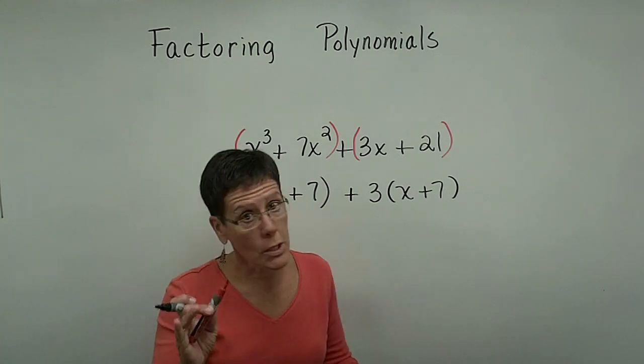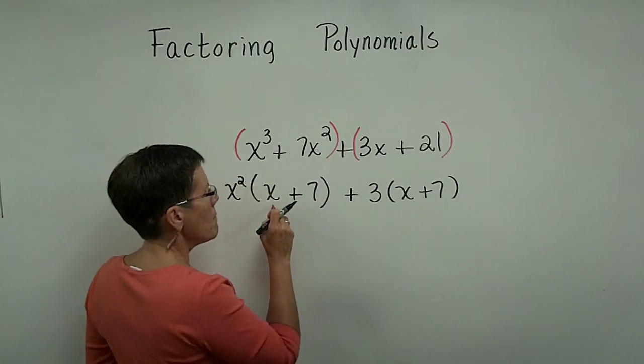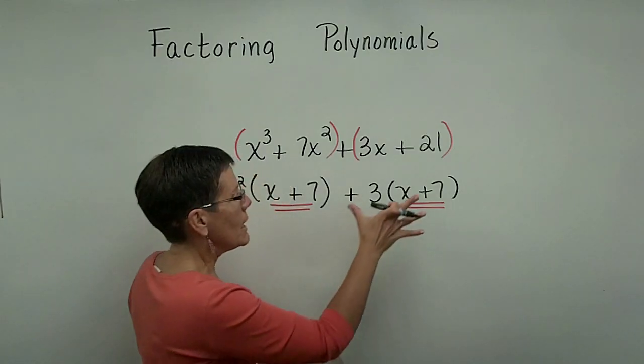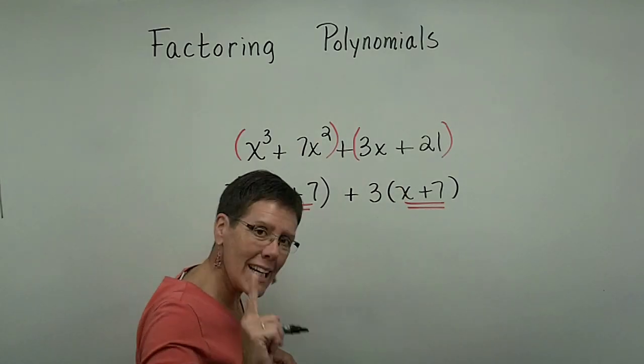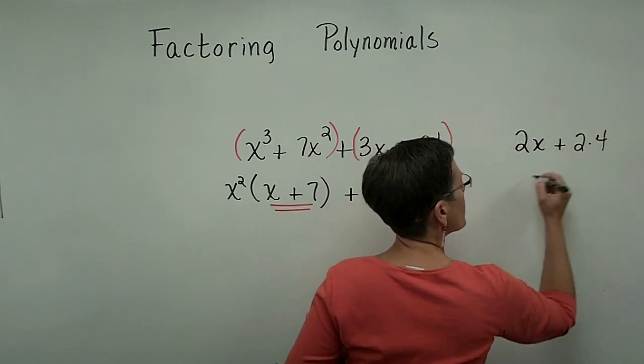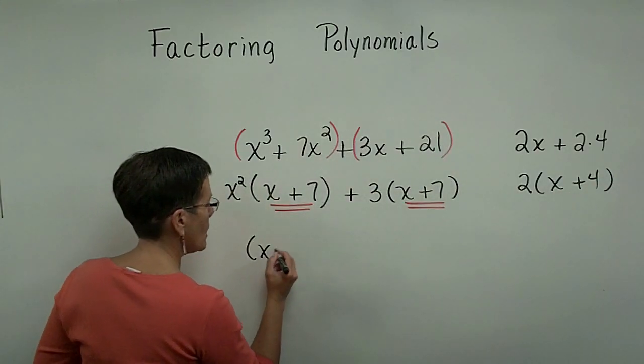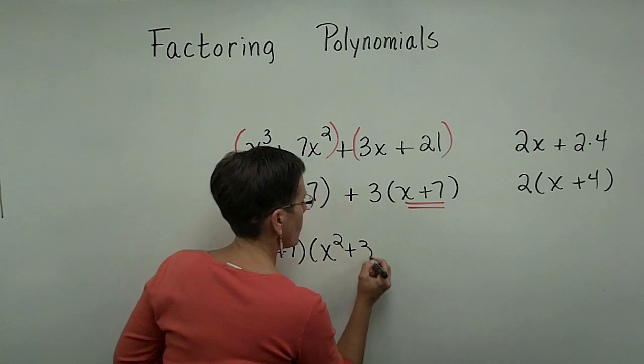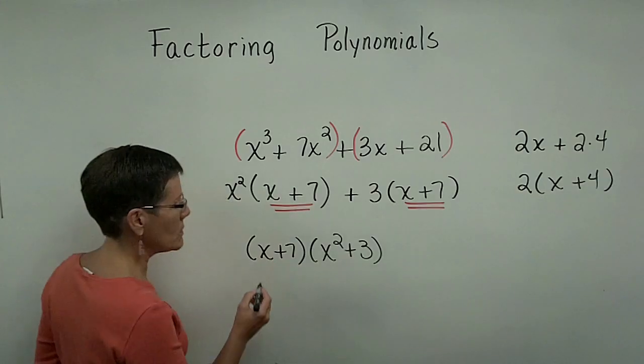If this problem is going to factor by grouping, these binomials have to match exactly. They are a common binomial factor in this term and this term. We're going to pull that out and write it down one time, just like in this problem. We pull the 2 out and write it down just once. So I'm going to pull the x plus 7 and write it down once, and then this x squared plus 3 goes in its own binomial, and the 4 terms originally given have been factored into 2 binomials.